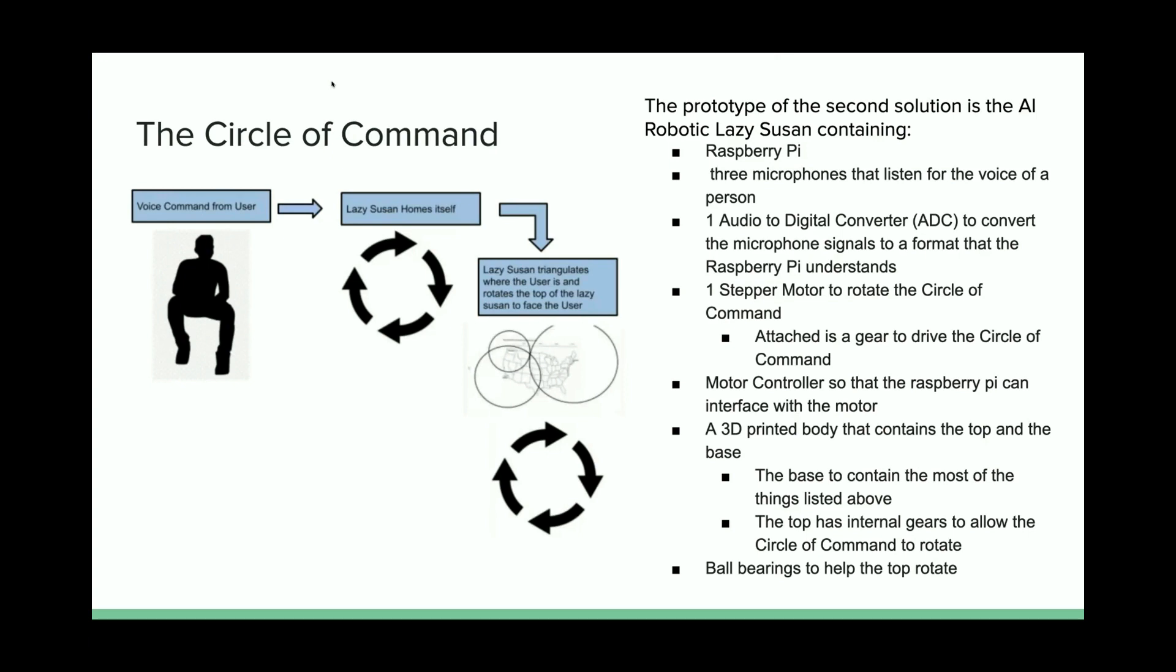There are three 3D printed parts that contain the top part and the base part, which are then put together. The base contains the electronics mentioned above, which includes the Raspberry Pi. The top has internal gears that allow the top to rotate and ball bearings which also help the top rotate.